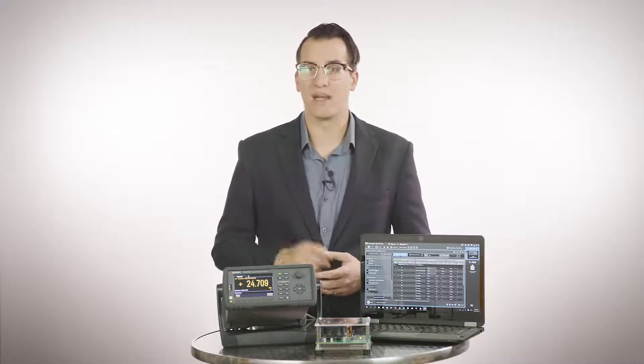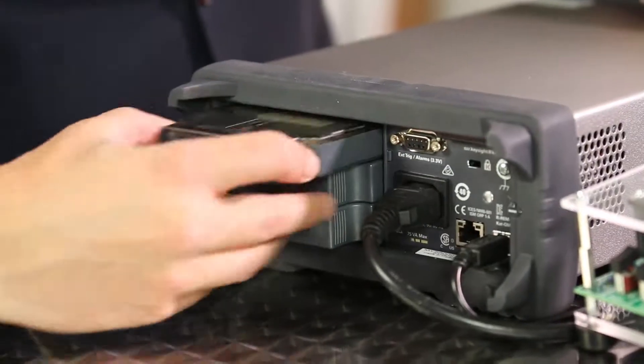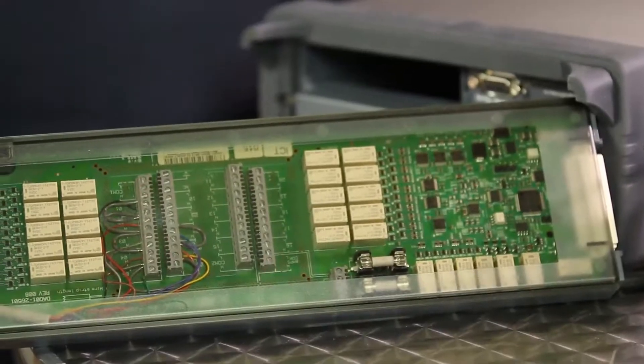The DAQ 970A offers 8 interface modules that have been designed and developed to make optimum measurements. They have improved temperature accuracy, faster switching rates, and lower current ranges compared to their predecessor.